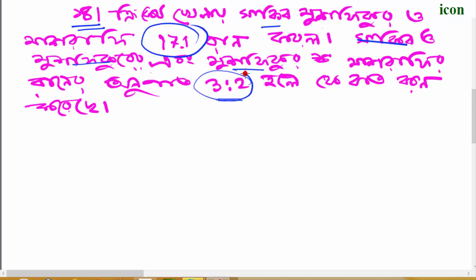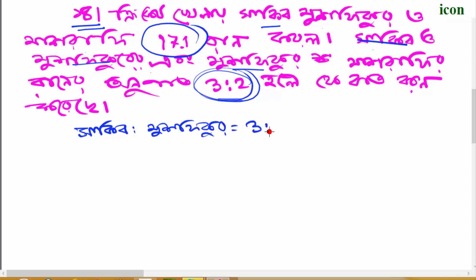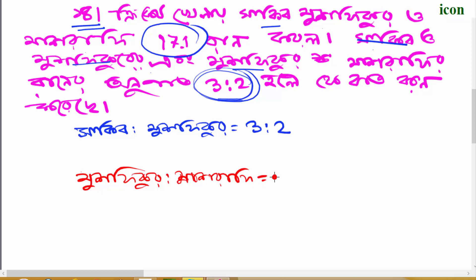The number is 3-2. Now, Sakib and Mushfikur — I'm going to write a note: Sakib is 2-2. Mushfikur: 3-2, 2-2. Now we're going to write a note — Mushfikur and Masrafi. Okay? Mushfikur and Masrafi: 2-2. Masrafi: 3-2, 2-2, 2-2.